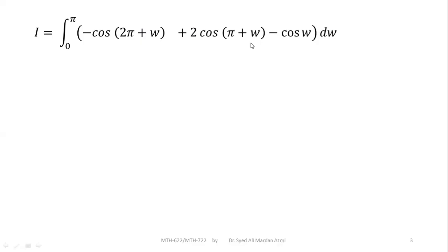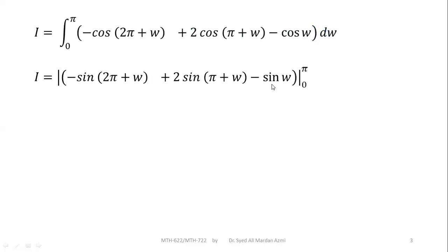Now I am going to apply the rules of integration with respect to the outermost variable, w. I have applied the integration on each term. Integration of cos is plus sin. So I get minus sin of (2pi + w) plus 2 sin of (pi + w) minus sin of w.